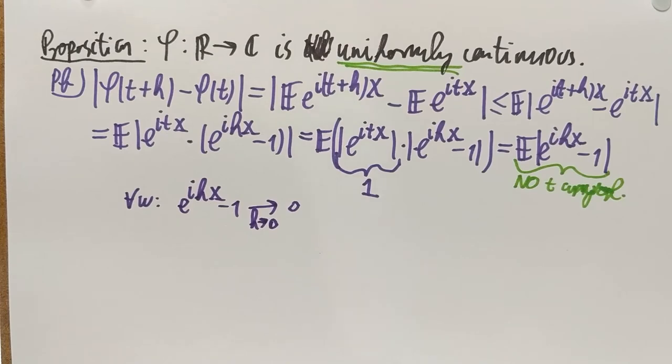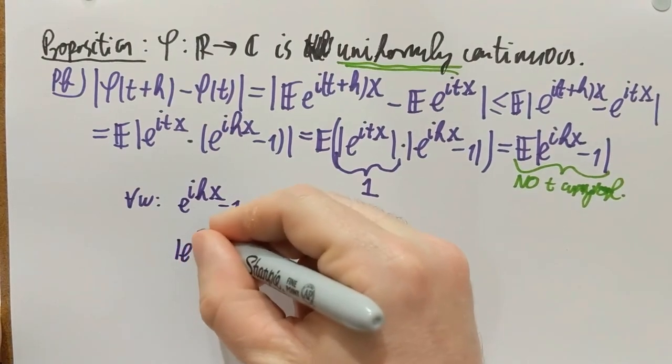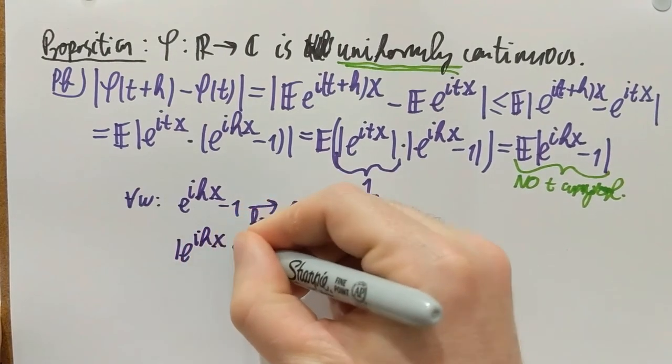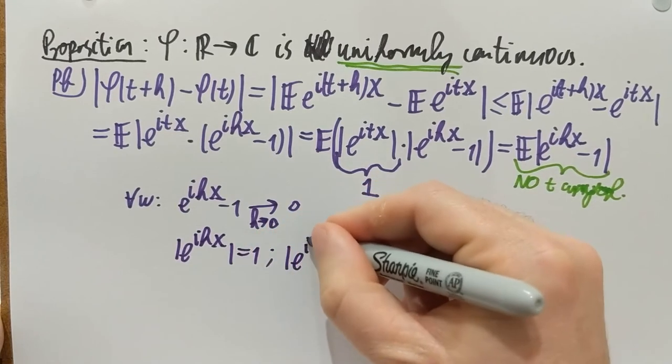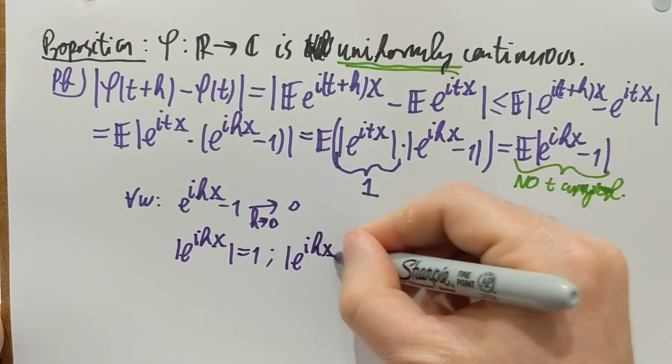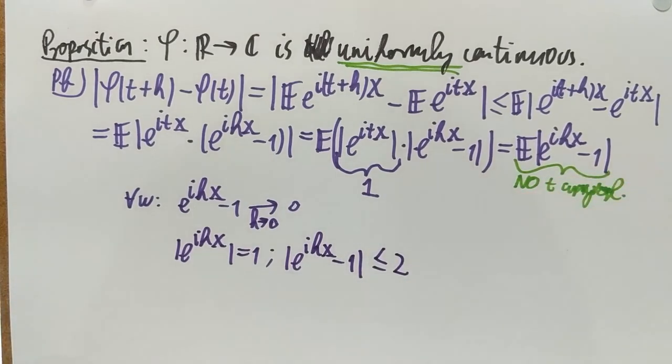Now, the other thing is that if you look at the mod of e to the i·h·x, that's of course 1. So, if I look at e to the i·h·x minus 1 under the mod, that's never larger than 2 by the triangle inequality, which is a bound independent of everything. It's a completely uniform bound.